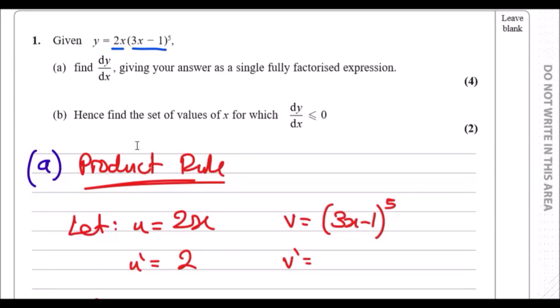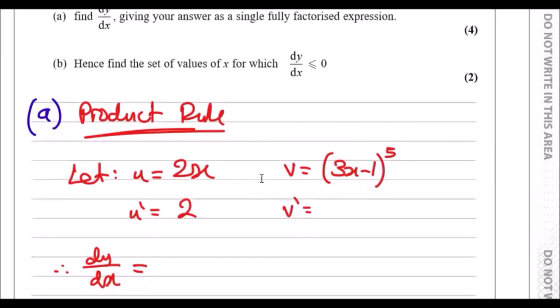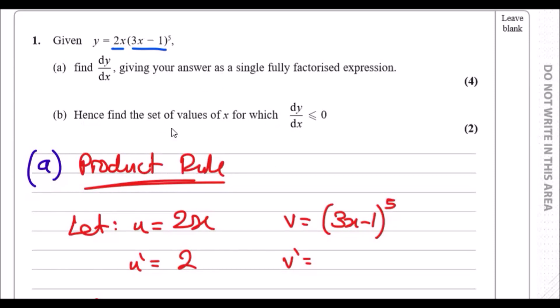Because you've got two terms multiplied together, we use the product rule. If it was 2x over this term it would be the quotient rule. When it's a single fully factored expression, you not only use the product rule but also have to tidy up completely.